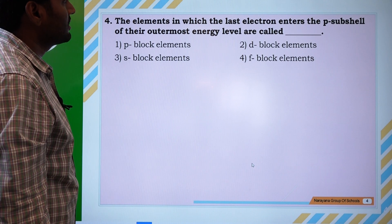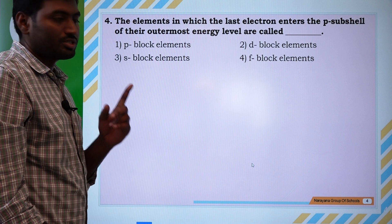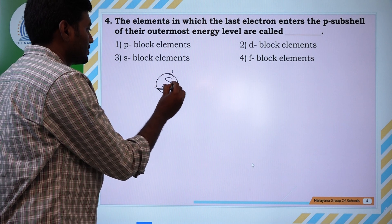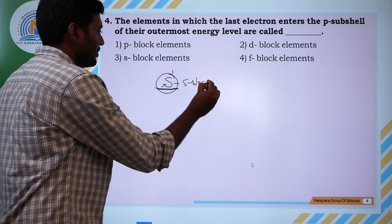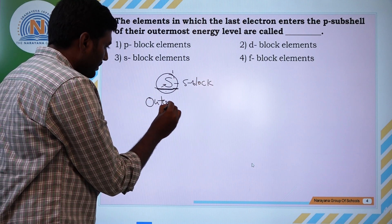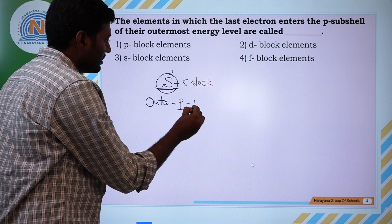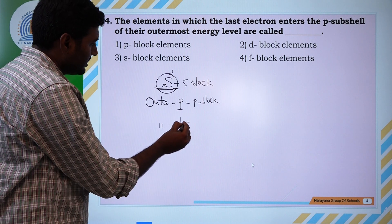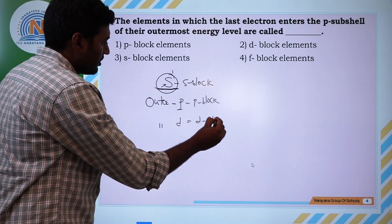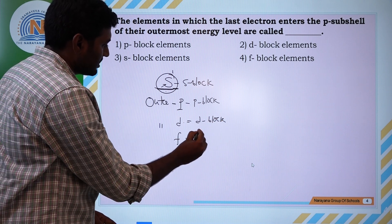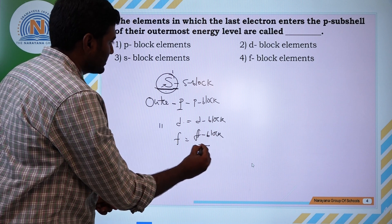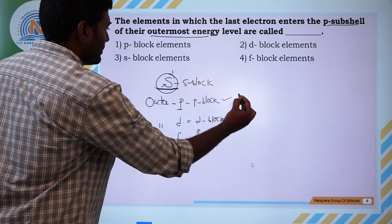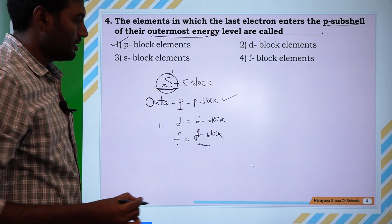Fourth question: the elements in which the last electron enters into the P-subshell of their outermost energy level. If the outermost electron enters into S, it belongs to S-block. If the outer electron ends in P-orbital, it belongs to P-block. Similarly, if the last electron enters into D, it is D-block. If the outer electron enters into F, it is called F-block. So, if the outermost energy level electron is in the P-subshell, it is called P-block, and the answer is P-block.